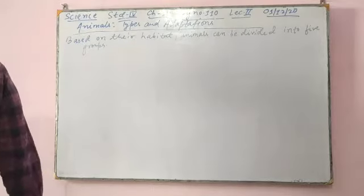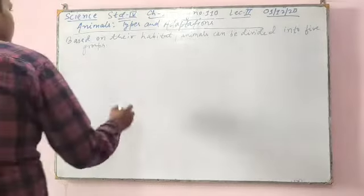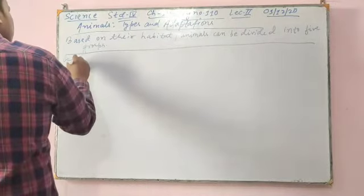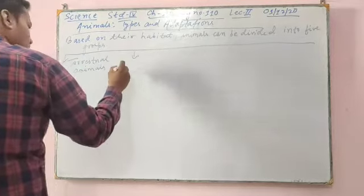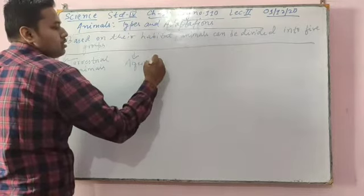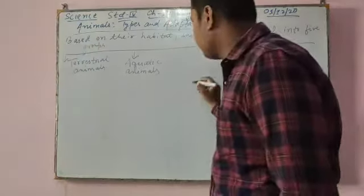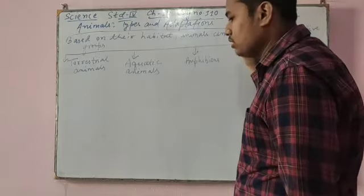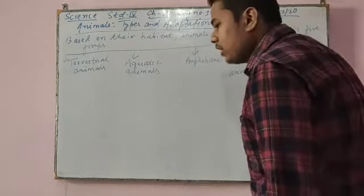The five groups are: first, terrestrial animals; second, aquatic animals; third, amphibians; fourth, aerial animals; and fifth, arboreal animals.